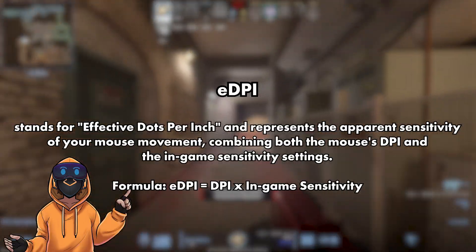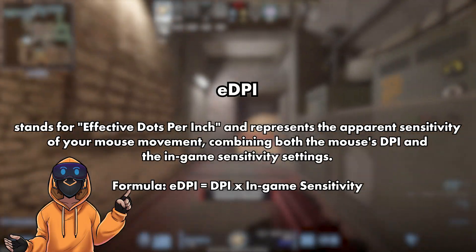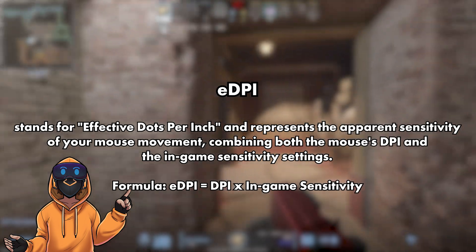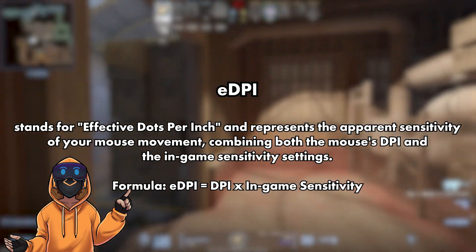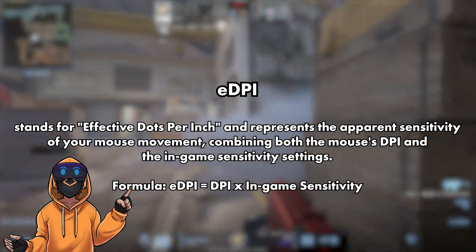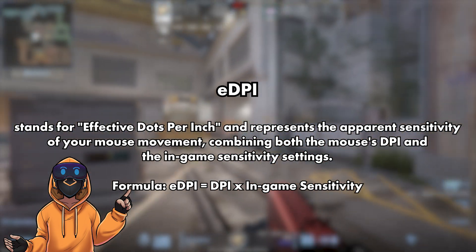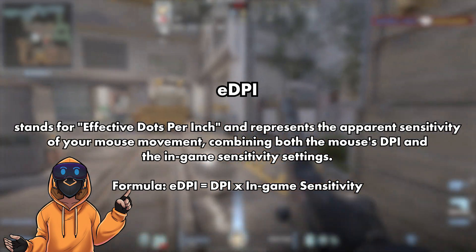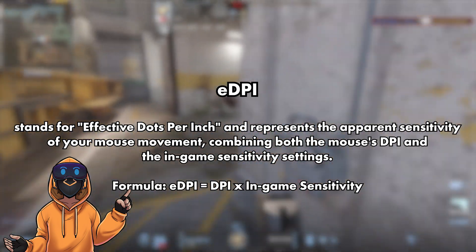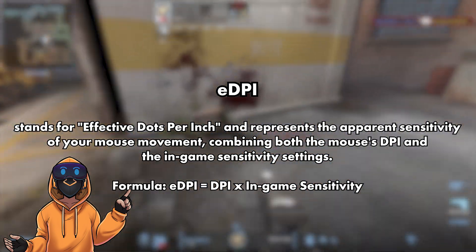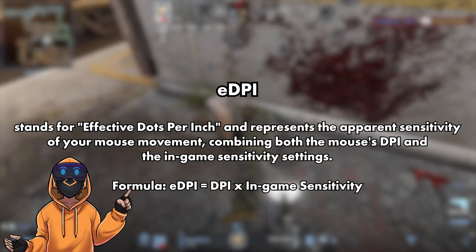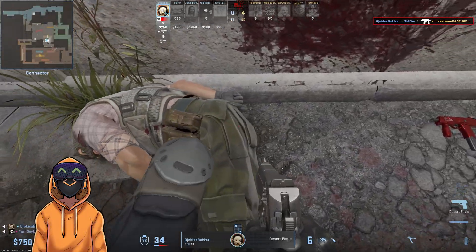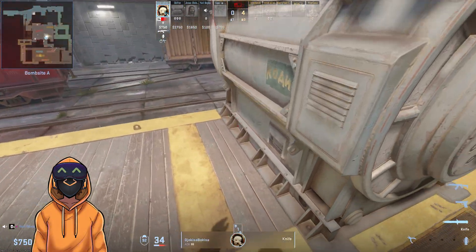The next important thing is E-DPI, the effective DPI. This is just the calculation of the actual sensitivity you're using. It is calculated by multiplying your DPI from your mouse with the in-game sensitivity, and that is then your effective DPI. So with that out of the way, let us now look at the data.